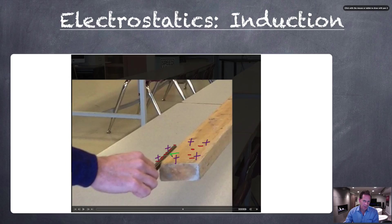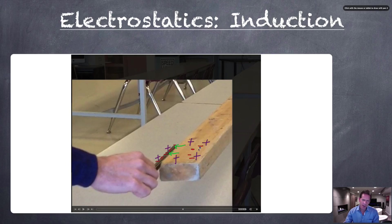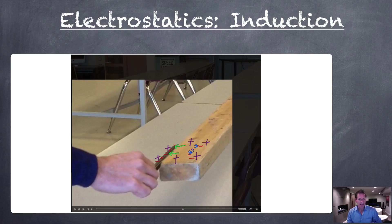So there's going to be an attractive force between the positives in the wood and the negatives in the amber rod. There would also be a repulsive force between the negatives on the right-hand side of the piece of wood and the negatives from the amber rod, but they're farther away. So that repulsive force is going to be a much smaller force than the attractive force on the left-hand side. That's why, even though the wood is neutral, the net effect is that it is attracted to the charged object.